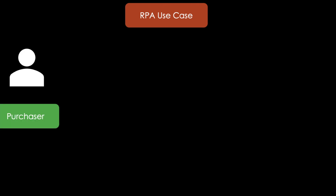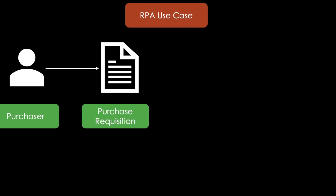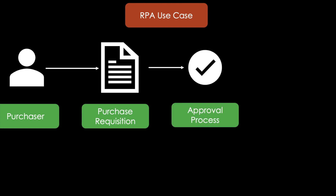Let's look at a specific use case for robotic process automation. Say you are a purchaser working in a big company. To prevent out-of-stock situations, you create dozens of purchase requisitions per day. Those purchase requisitions usually exceed certain budget restrictions, so that they run into an approval process.